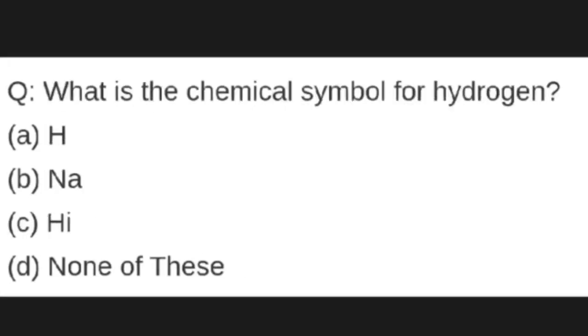What is the chemical symbol for hydrogen? Options are A: H, B: NA, C: HI, D: none of these. Correct answer is A: H. Hydrogen symbol is H.